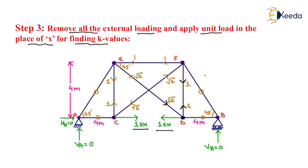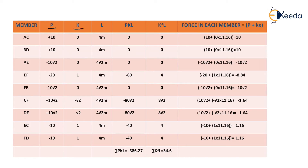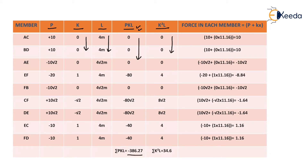We need to make a table where we write the P-forces, K-forces, member length, and compute the products P·K·L and K²·L for each member: AC, BD, AE, EF, FB, CF, DE, EC, and FD. The P-values come from the determinate analysis with positive sign for tension and negative for compression. The K-values come from the unit load case. We write the length of each member, then multiply P·K·L and K²·L accordingly. The summation of total P·K·L equals −386.27 and the summation of K²·L equals 34.6.